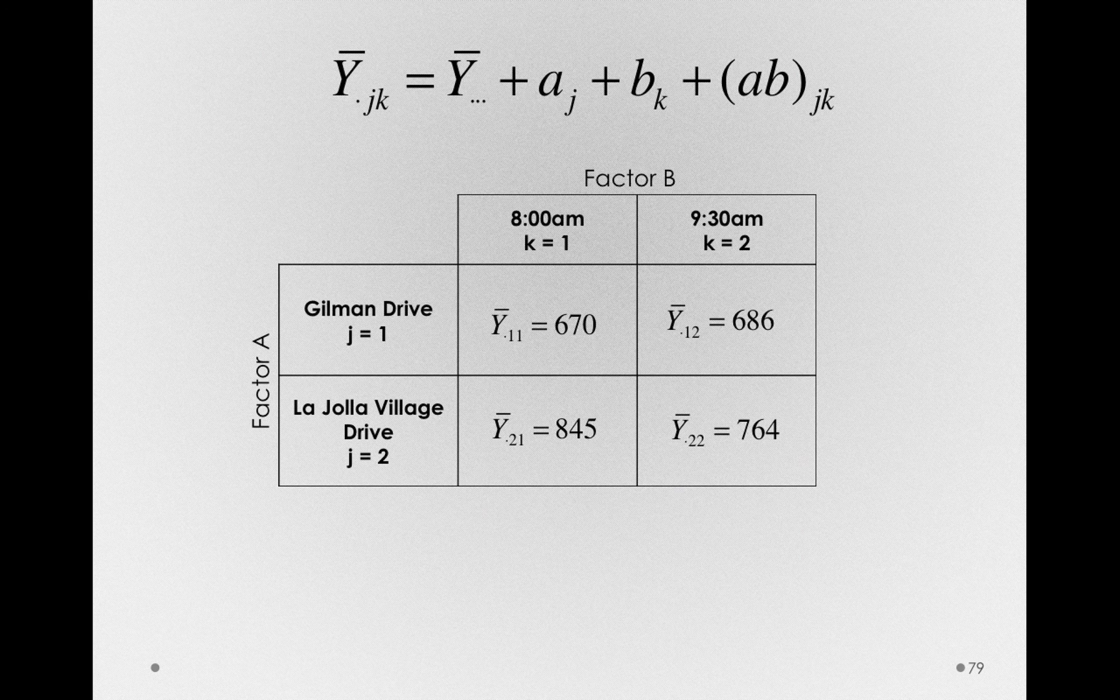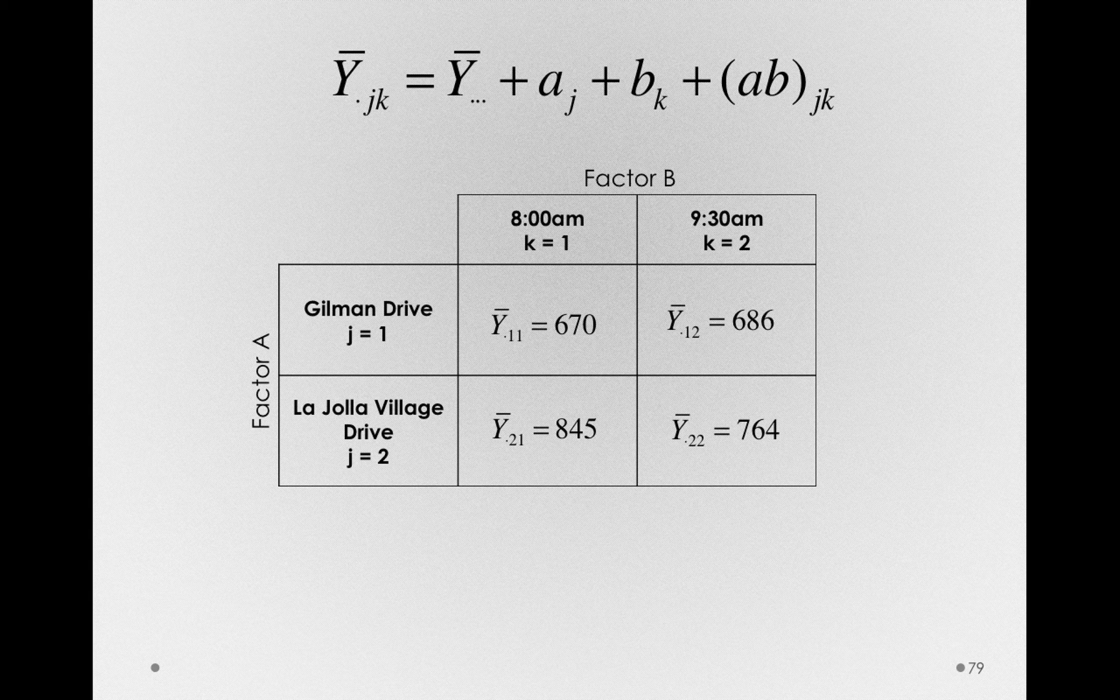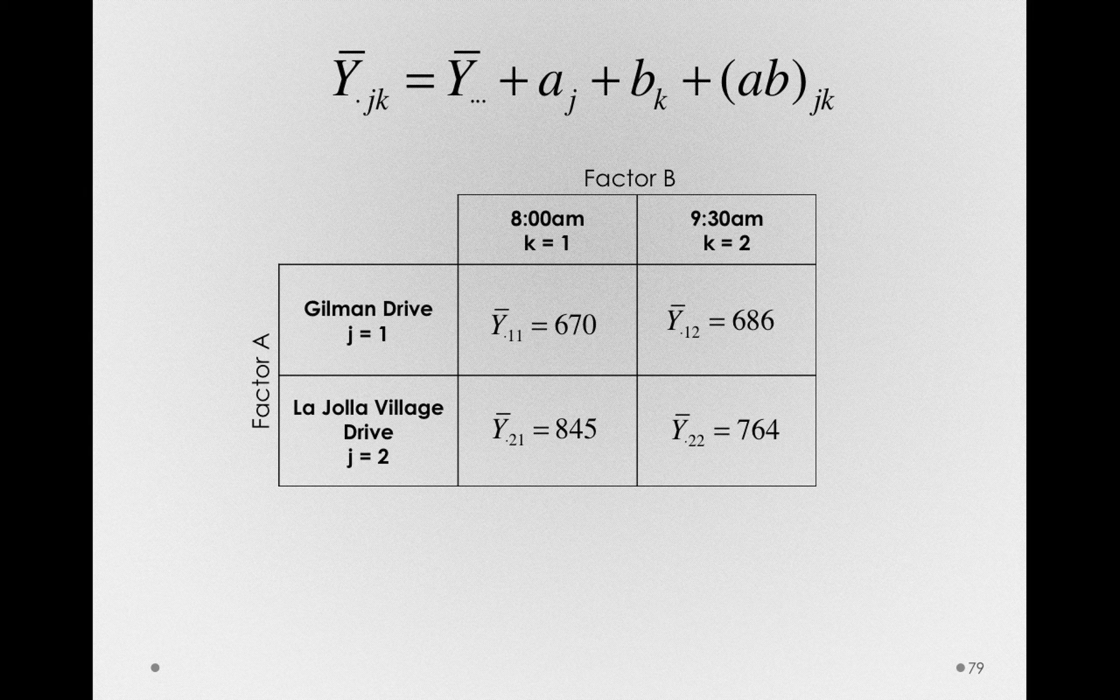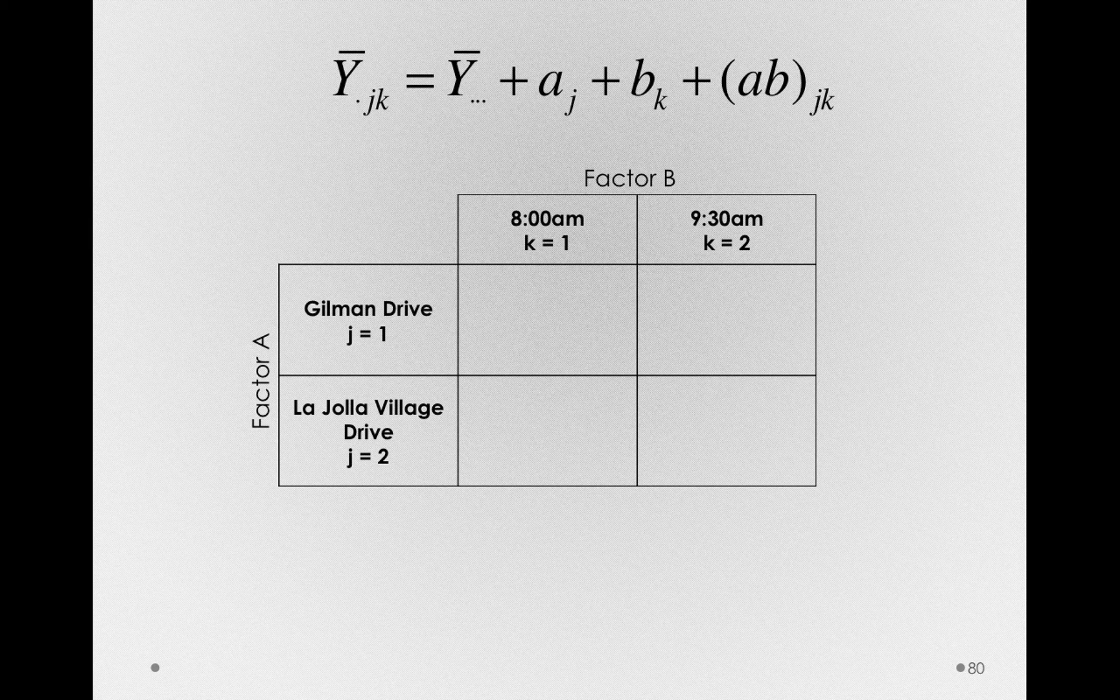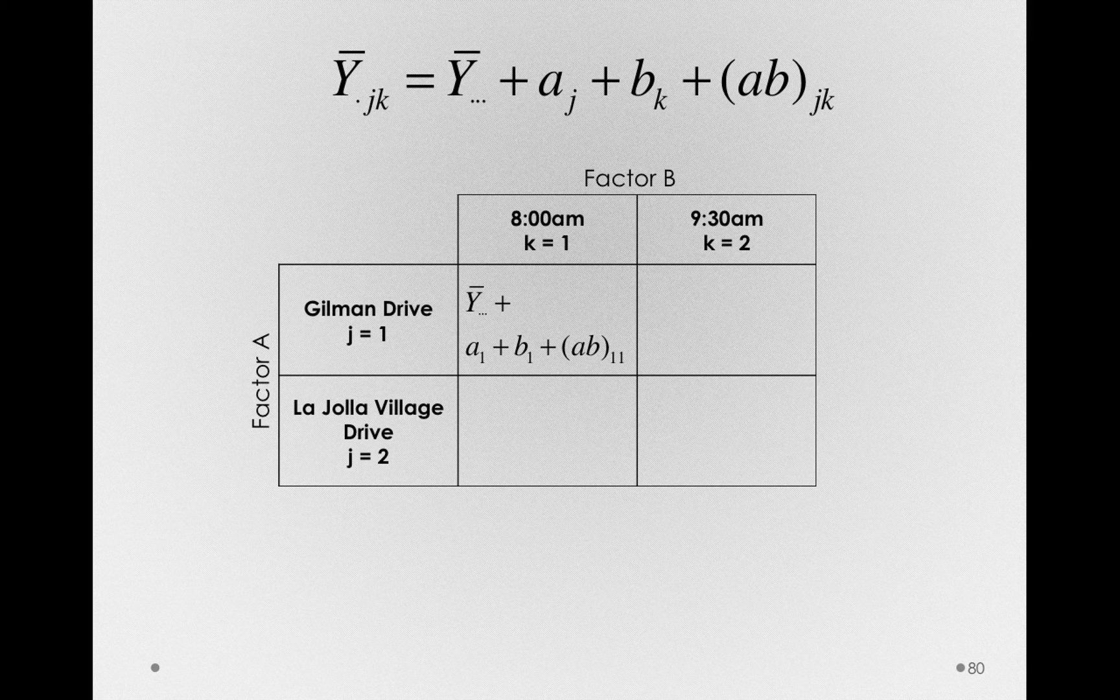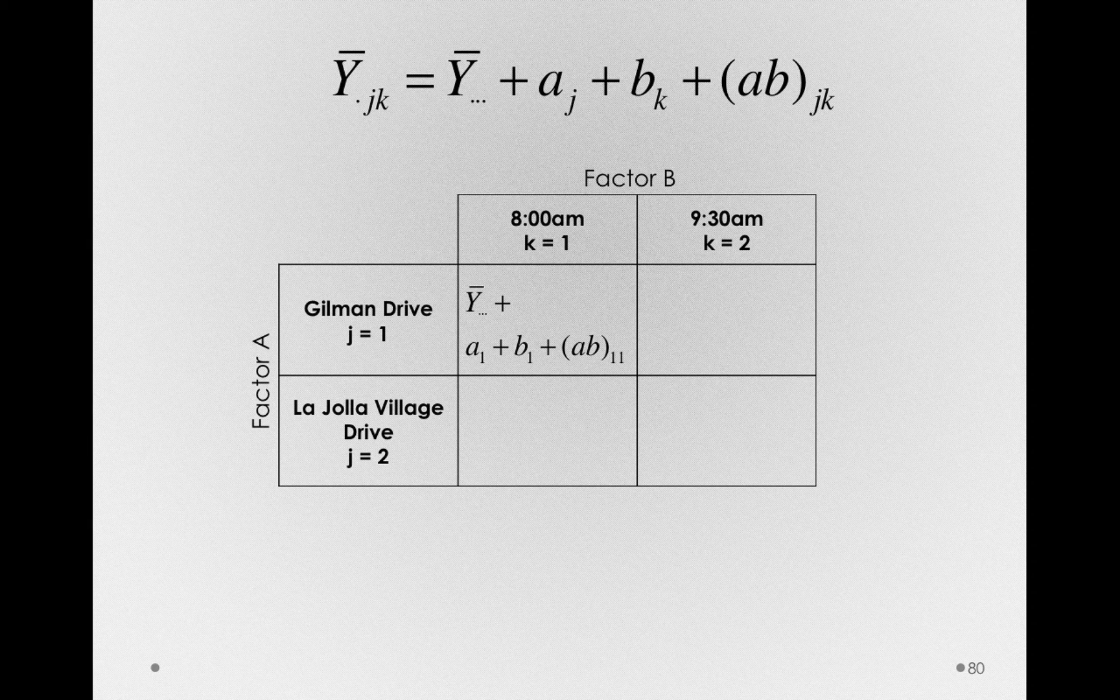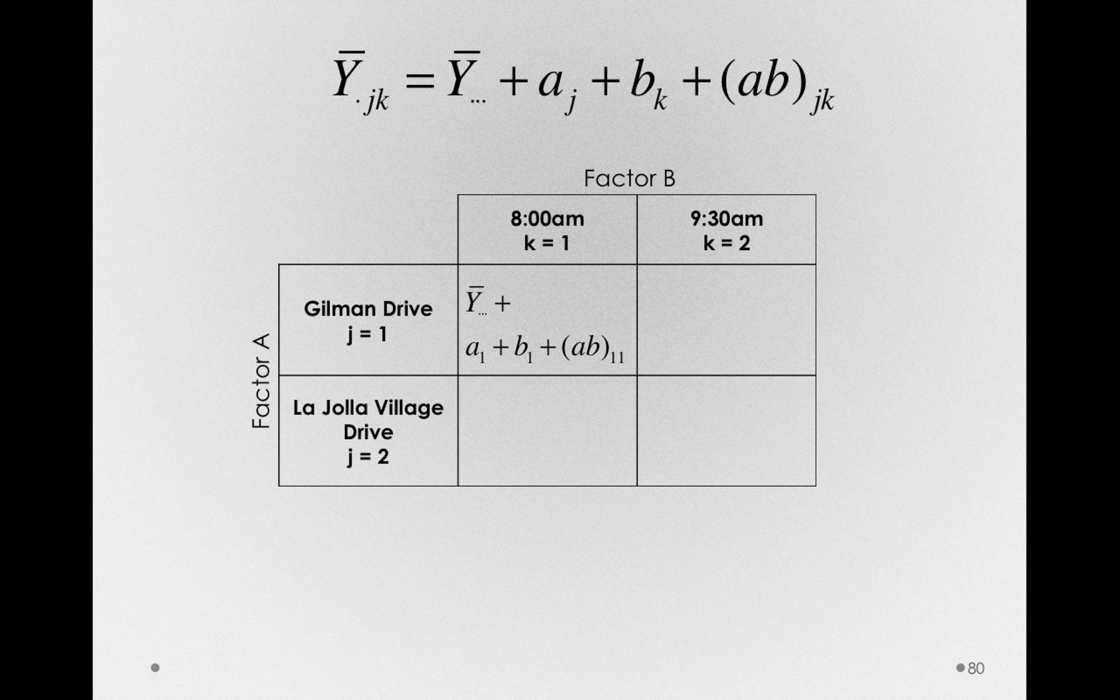Let's first start by, for each of the different groups, writing out what this model would say the mean is equal to. So we already have the general notation at the top for what a sample mean is, but let's do so for each of the groups. So starting with Gilman Drive at 8 a.m., this model would say that the mean of this group is y bar dot dot dot, the grand mean, plus a_1 plus b_1 plus ab_11.